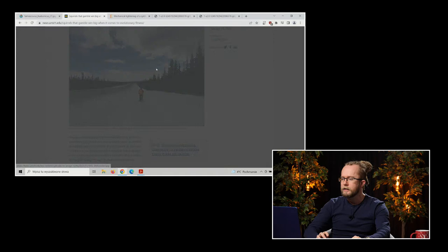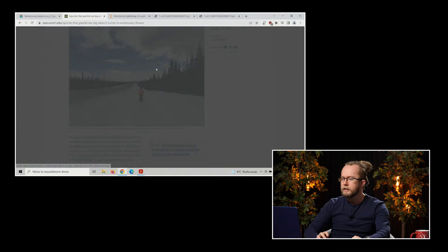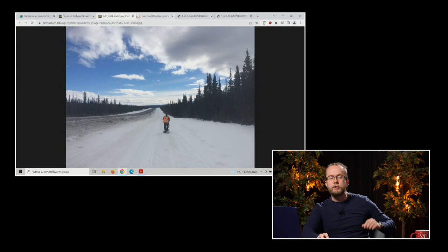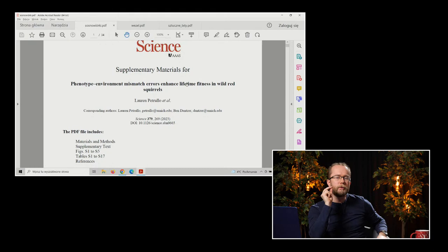Tu mamy zdjęcie pani naukowczyni, która bada te oto sosnowiórki. Pani naukowiec w jakichś tam budkach, rakietach śnieżnych. Mówimy o Yukonie na Alasce. No i cóż, na czym polega problem, który chcemy dzisiaj rozwiązać? Pytanie brzmi, jak powinna optymalnie postępować sosnowiórka, biorąc pod uwagę fakty przyrodnicze.